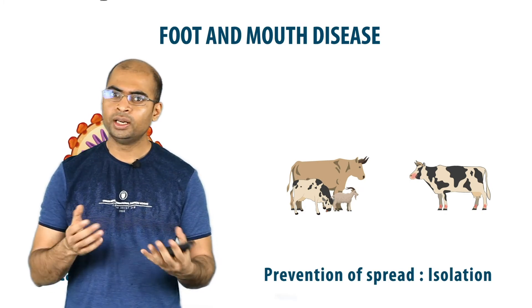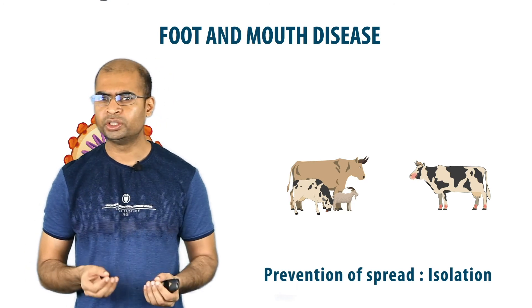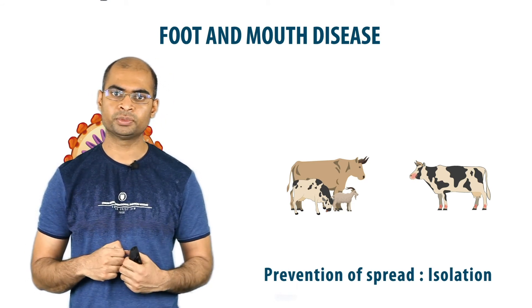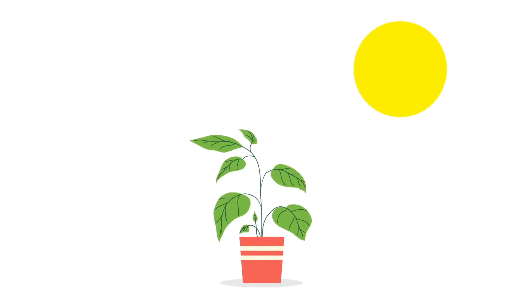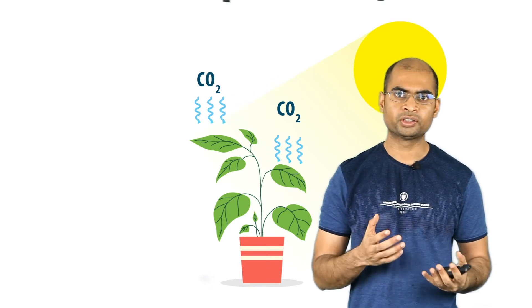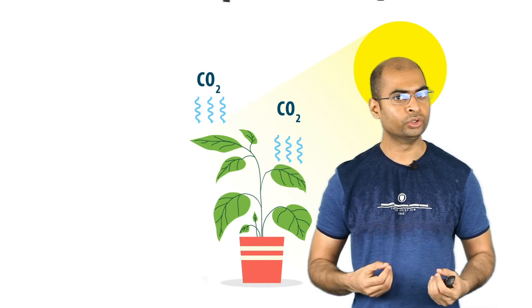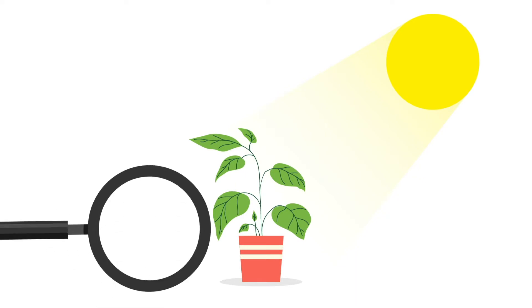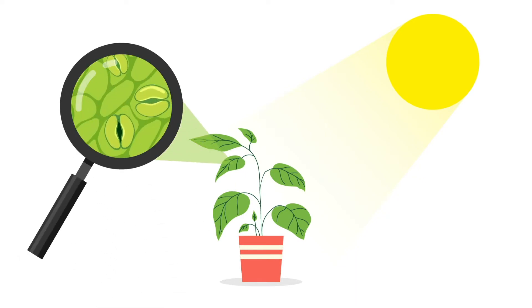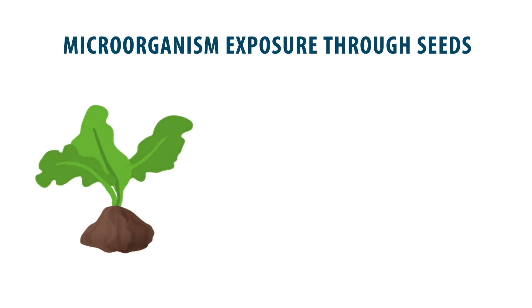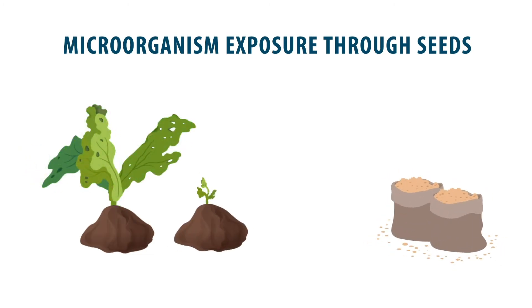Now let's switch gears to plants. But how do you think plants get exposed to these microorganisms? Well, we know that plants take in carbon dioxide from the air for photosynthesis, the process by which they make their own food. This intake of carbon dioxide happens through small openings on their leaves called stoma, which is one of the ways in which microbes can enter the plant. In other cases, it can happen through seeds from infected parents or because they got contaminated during storage.